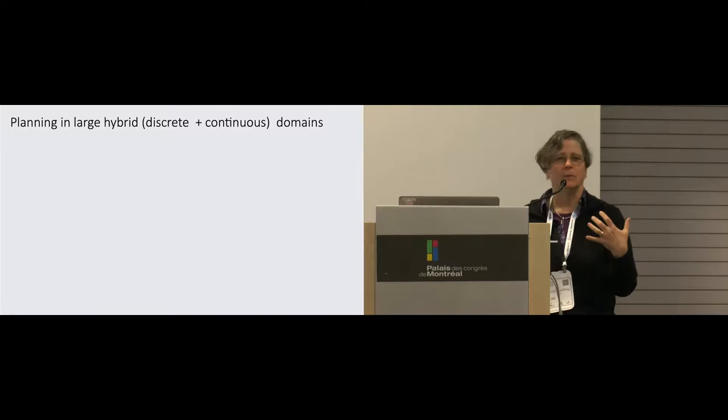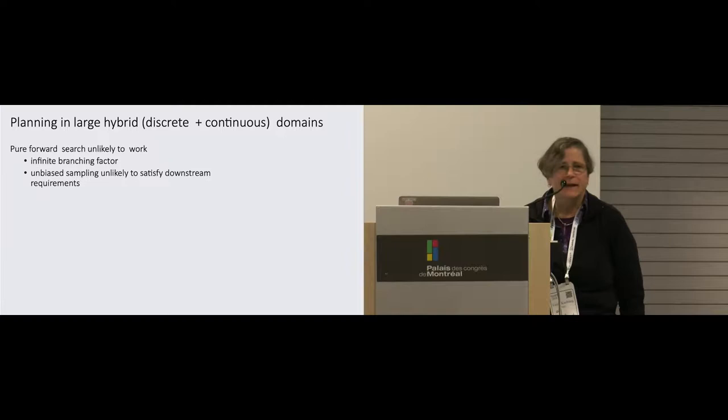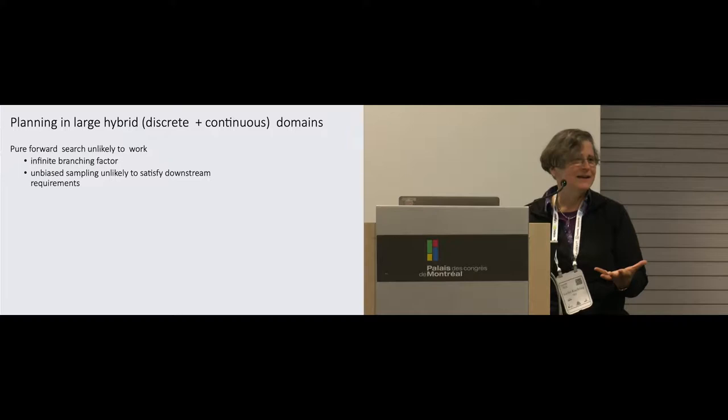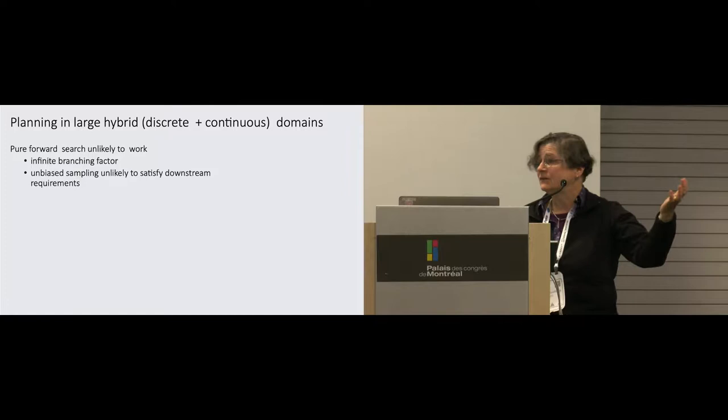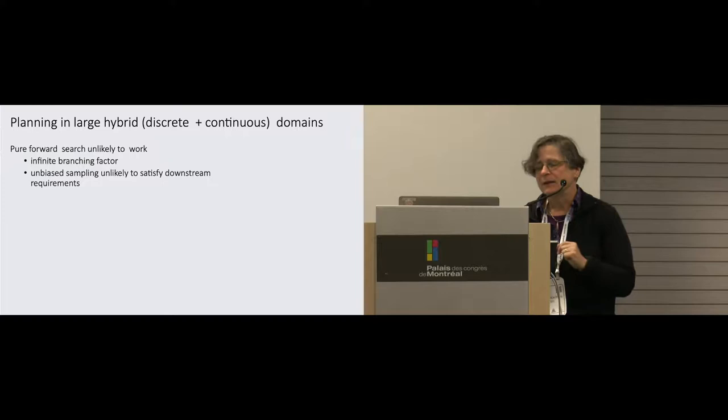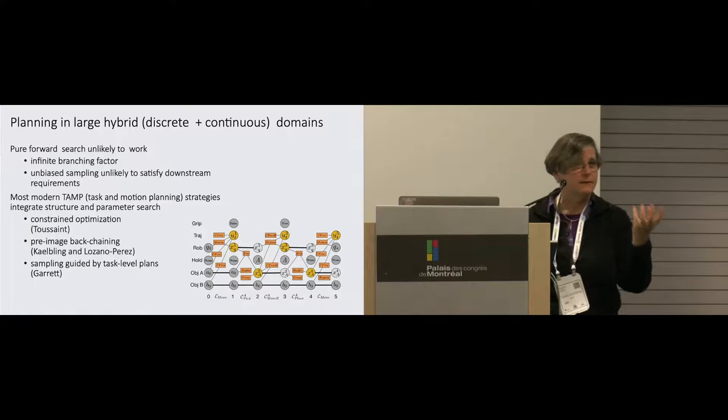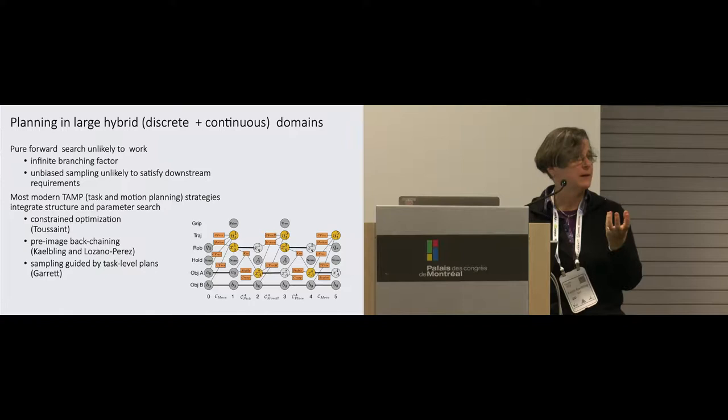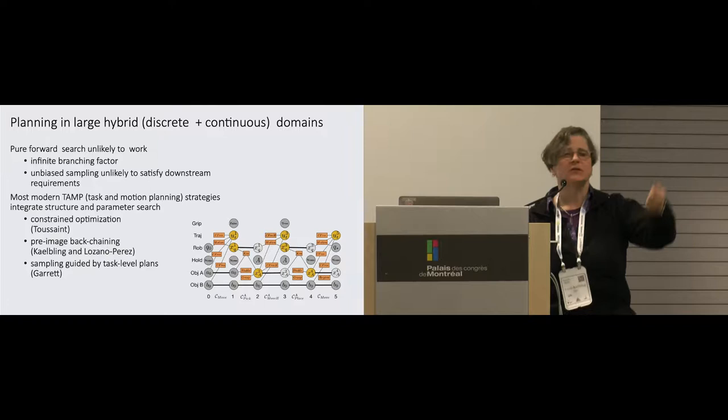What is the state of the art right now for planning in large hybrid domains? By large, I mean really high-dimensional, like lots of objects. The problem is that pure forward search generally doesn't work very well. We have usually reasonably long horizons and infinite branching factors. And so A-star with infinite branching doesn't work too well. You have to sample if you have infinite action selections. And the way you do the sampling is really critical to success. Not just a matter of slow or not slow, but a matter of works or doesn't work.